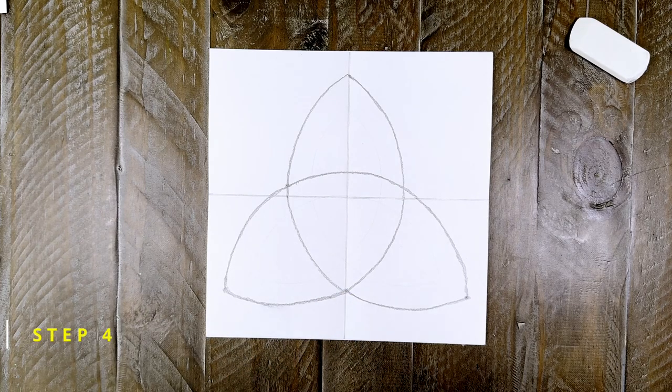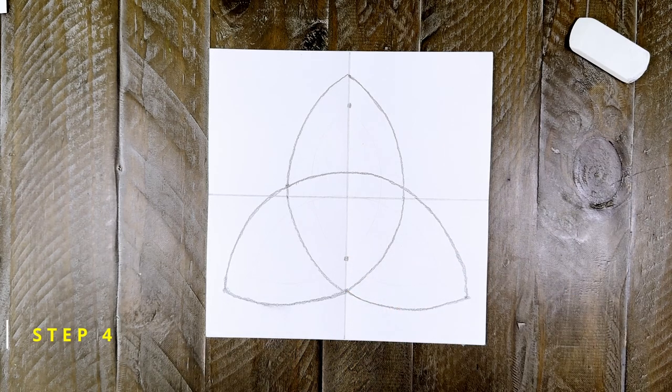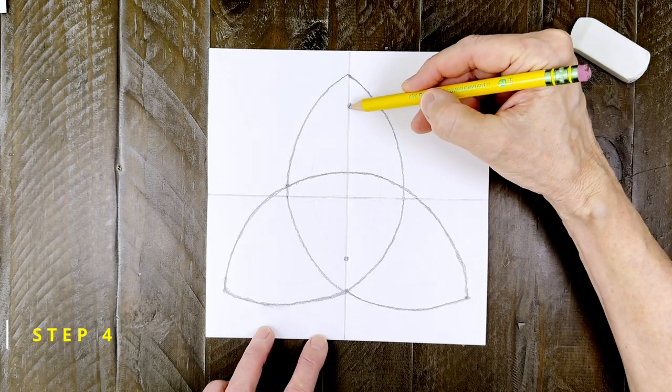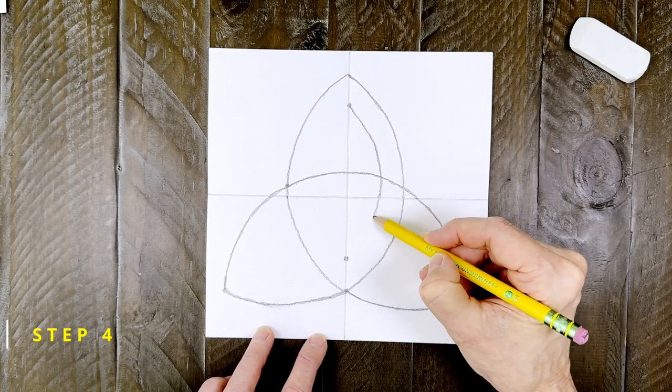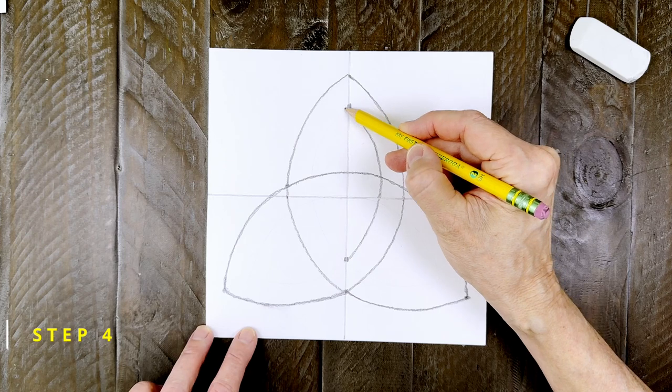Step number four. To plan the inside of the knot, start with two dots. Connect the dots with a curve on the right side. And then do the same on the left side.